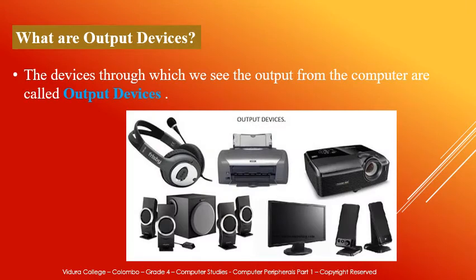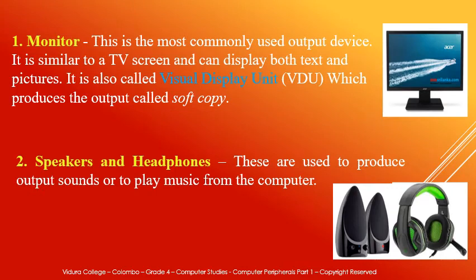The devices through which we see the output from the computer are called output devices. Monitor — this is the most commonly used output device. It is similar to a TV screen and can display both text and pictures. It is also called visual display unit or VDU. The output produced by the monitor is called the soft copy.